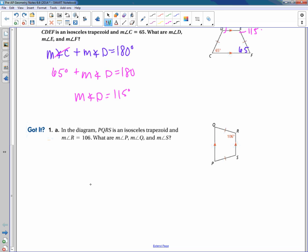Okay, so I'm going to pause just a second and let you guys work out number one. Okay, so the answers for this one would be angle S would be 106, angle Q would be 74, and angle P would be 74.